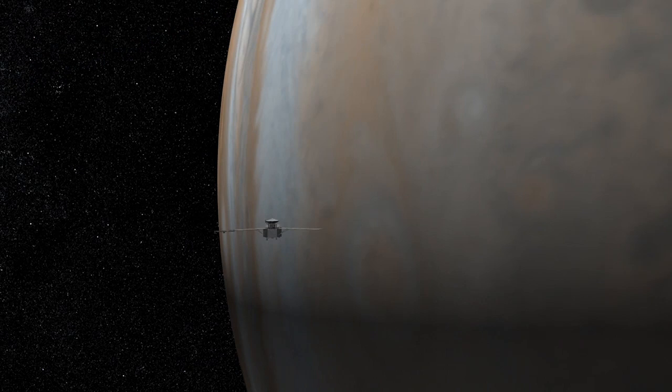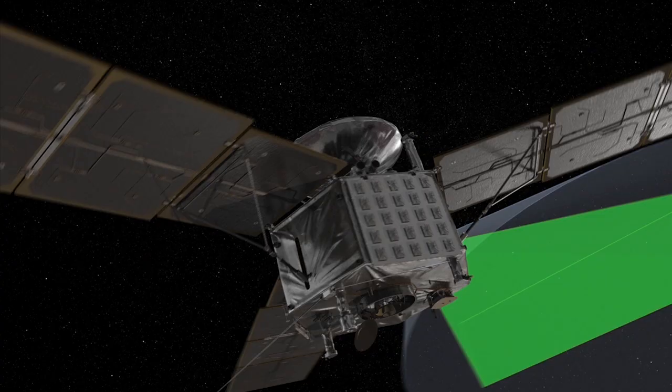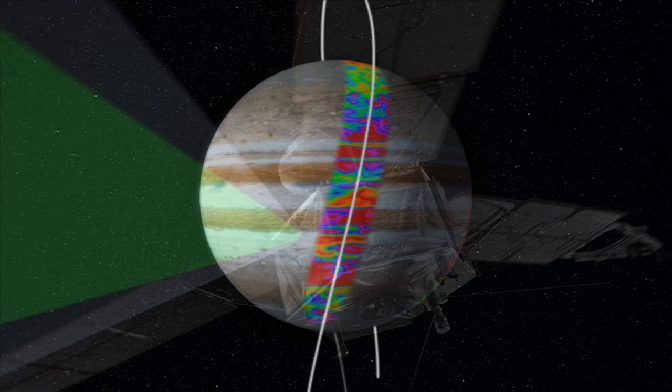And we do this over the 37 orbits of the nominal mission and by the time we're done we've got orbits separated in longitude by about every 12 degrees. So we completely cover the sphere.